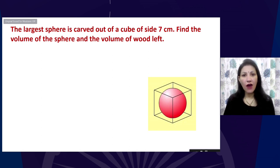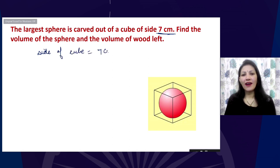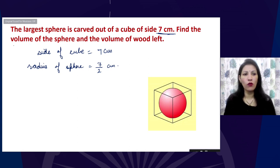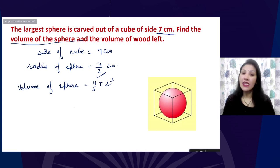The largest sphere is carved out of a cube, and this time the side of the cube is given as 7 cm. Since the sphere fits exactly, its diameter equals the side of the cube, so the radius of the sphere is 7/2 = 3.5 cm. We need to find the volume of the sphere.